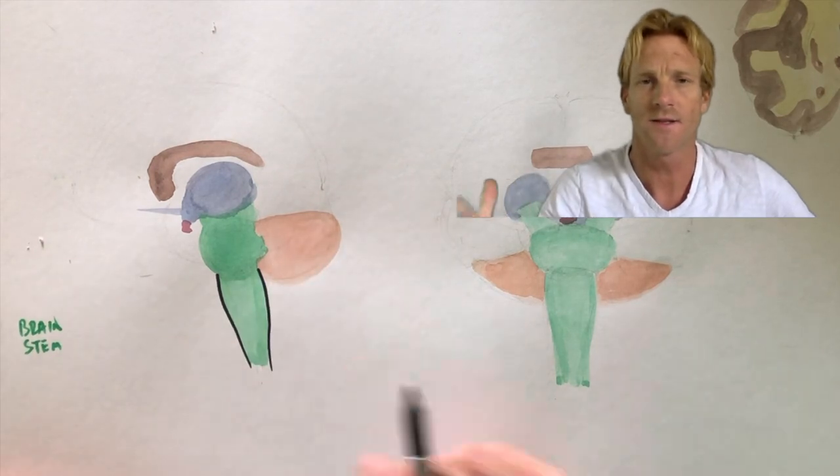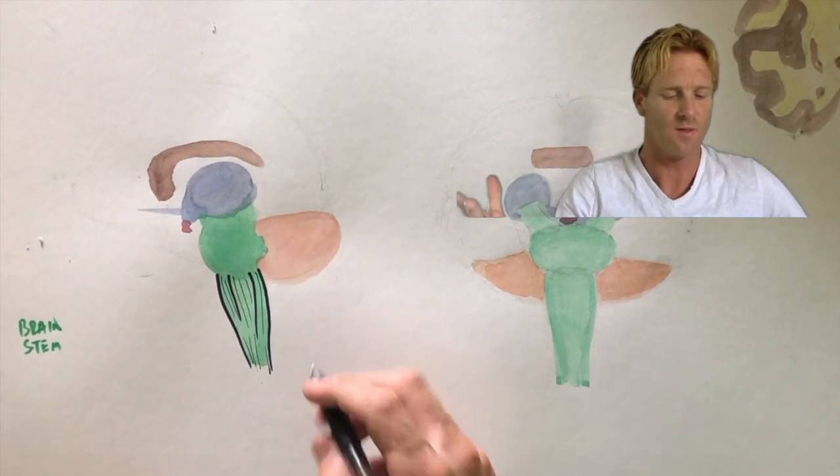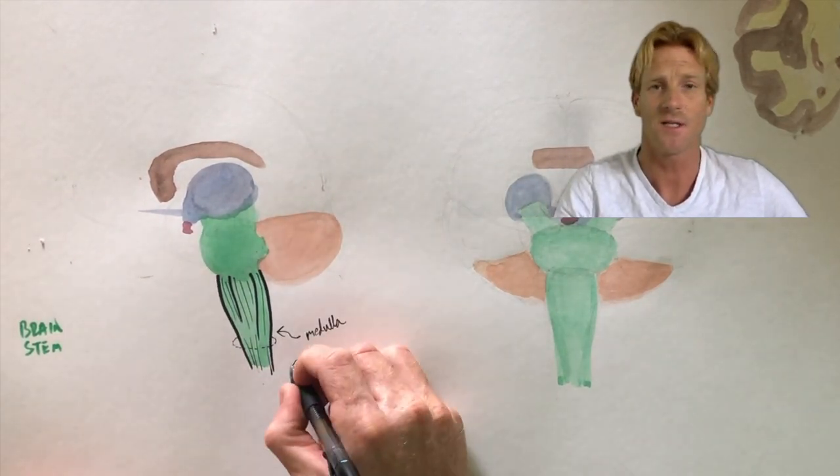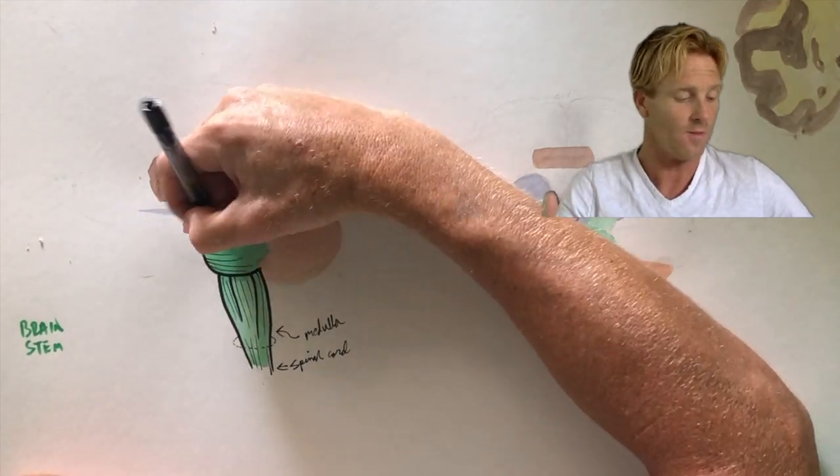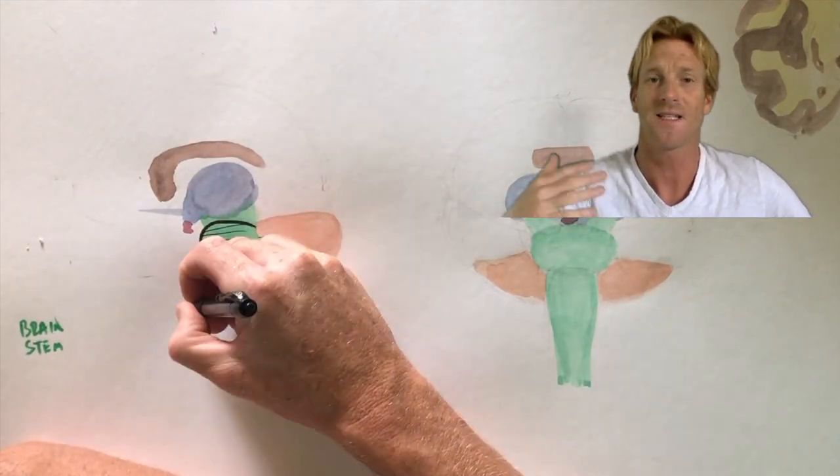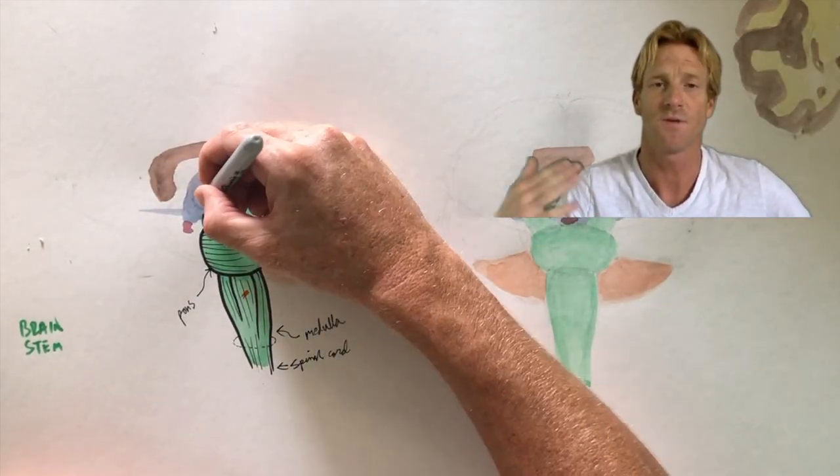So the brain begins as the spinal cord enters into the skull through the foramen magnum. The first part of the brain is the brain stem, that's everything shown in green. The most inferior part of the brain stem is the medulla, on top of that is the pons, and then you have the midbrain which is most superior.